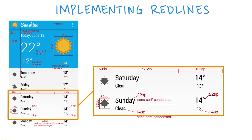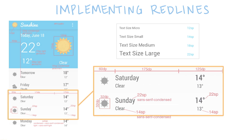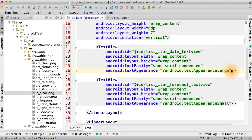Hence, when the red line says that the date text should be 22 SP for font size, we could specify Android text size to be 22 SP, but the text appearance large attribute already maps to that value. Note that the font sizes are specified in SP and not dips. SP stands for scaled pixels, so you can scale with the device font size. In our app, we specify text appearance large and text appearance small, which will give us 22 SP and 14 SP respectively.